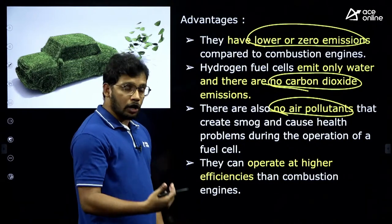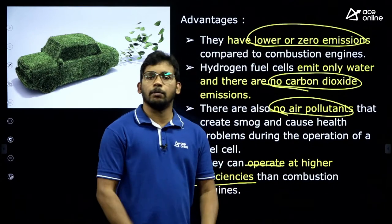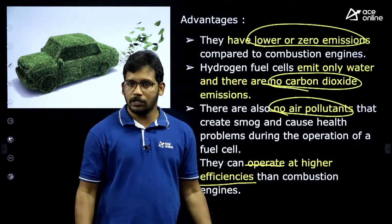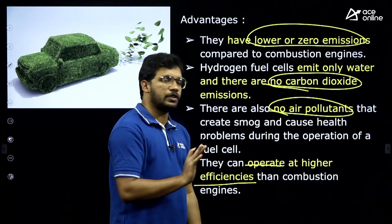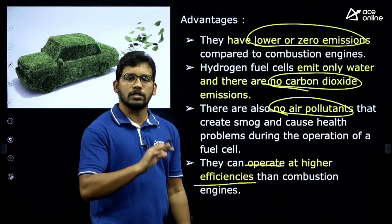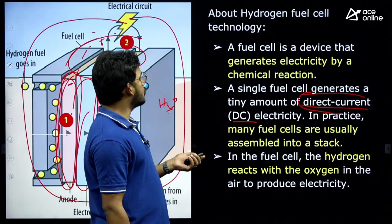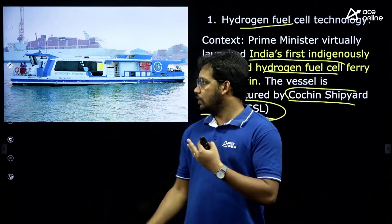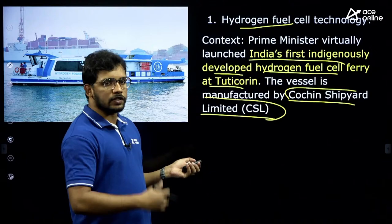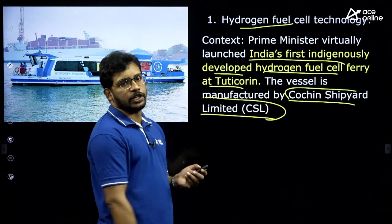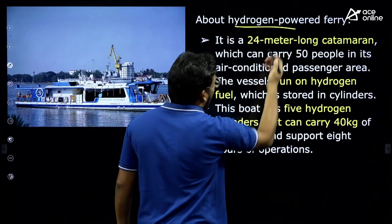Even normal batteries release a small amount of pollutants when energy is used — fuel cells have no such unwanted emissions. Their operation efficiency is much higher — they can generate more energy in a given time and work for longer periods. Because of these positives both for climate and efficiency, countries across the world are trying to replace conventional energy with fuel cells, as was done in this ship.